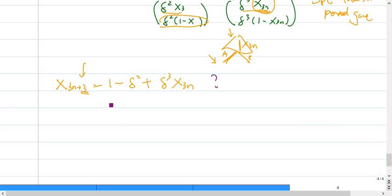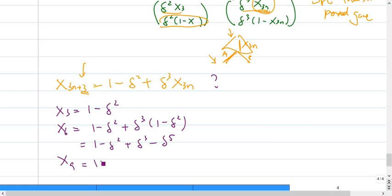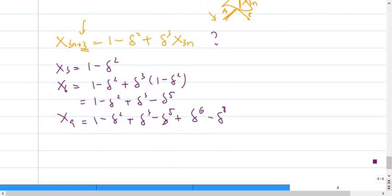The very easy way is we know what x3 is. So it's this. Then we can calculate x6, right? It's just 1 plus, substitute this thing, delta 3, 1 minus this. We can simplify it, plus delta 3, minus delta 5. Similarly, we can get x9. It will become hard, but we can see the pattern now I think. This is delta to the power, so delta 6 minus delta to the power of 8.